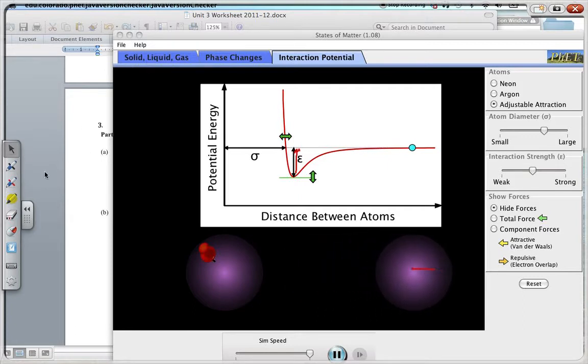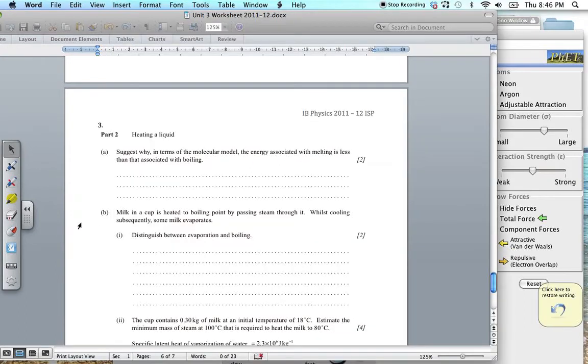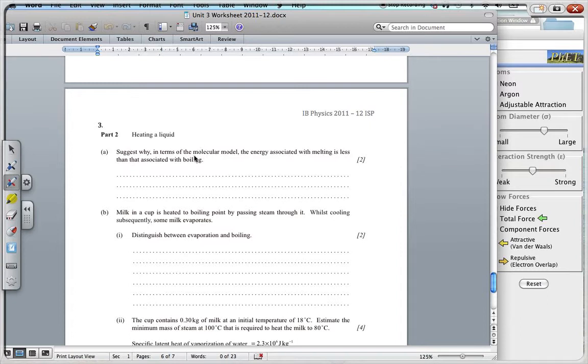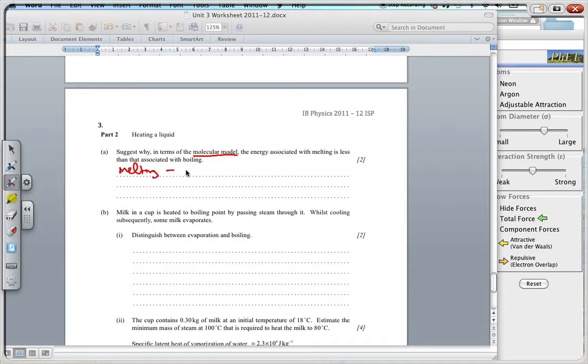So let's go back to our question here. In terms of the molecular model, we have, with melting, you have a loosening, loosening of the bonds. But in boiling, as with boiling, there is a total separation, total separation of the molecules.